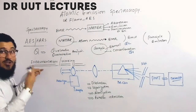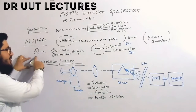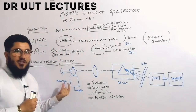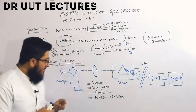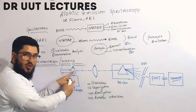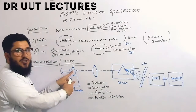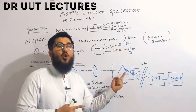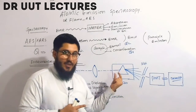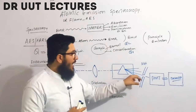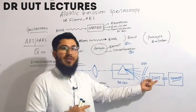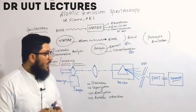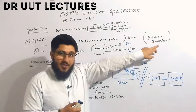Now we will see the instrumentation and working of atomic emission spectroscopy. The instruments are: the nebulizer and the flame source, which helps in atom formation and is also called the atomizer; then the lens; then the monochromator, which is a prism; then the slit; then the photomultiplier tube; and finally the detector.